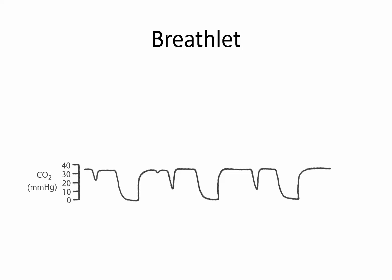Now let's look at some abnormal CO2 waveforms. The first is called a breathlet or curare cleft — a depression in the plateau that occurs when the patient attempts to take a spontaneous breath during exhalation. It is generally associated not so much with inadequate muscle relaxation, although paralyzing the patient will eliminate it, but rather with an increase in CO2, because the patient would not be making a respiratory effort if CO2 were not above the apneic threshold.